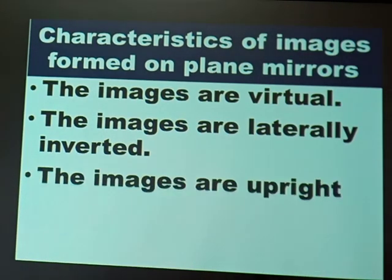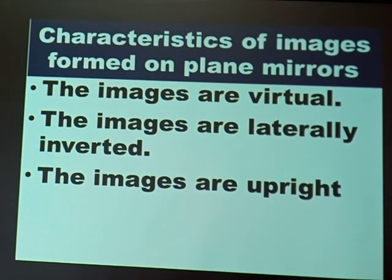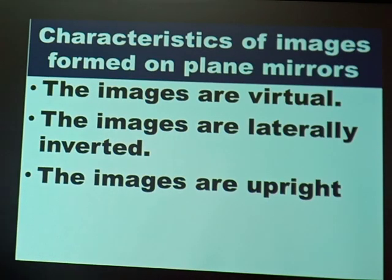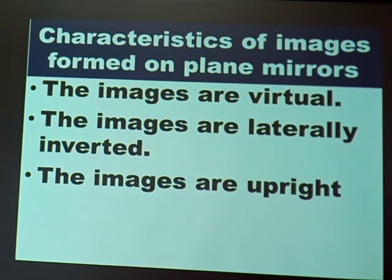The third characteristic: the images are upright. If you look at yourself in a mirror, your image will appear upright the way you are standing. If you decide to bend, your image will also bend. If you stand upright, your image remains upright — your image will not turn the other way around. That is why we say images are upright.